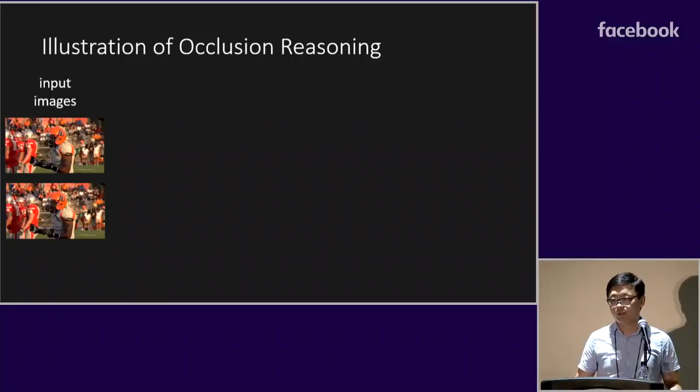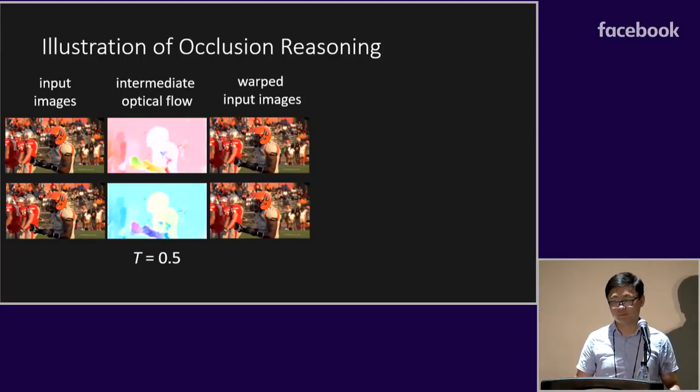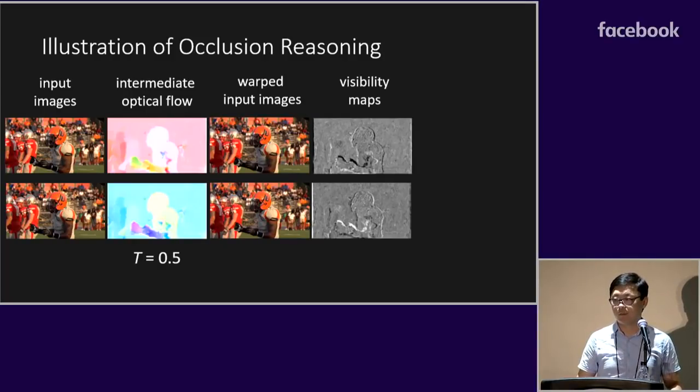Here are some illustrations of intermediate results. Given input images, we predict intermediate optical flow at time step t, which are used to warp both input images. We also predict pixel-wise visibility maps of input images, which are used to blend warped input images to synthesize an intermediate frame.